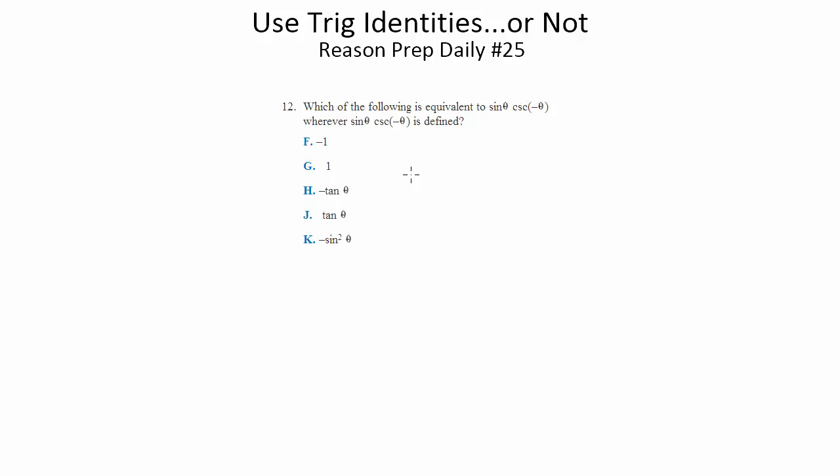So here, we want to know which is equivalent to sine of theta cosecant of negative theta. Instead of using a trig identity, let's pick a theta, find the value of this, see which choice matches.